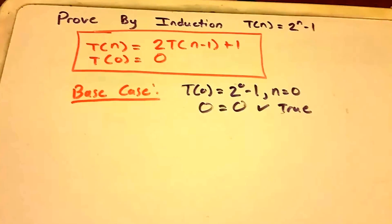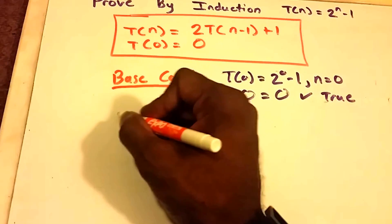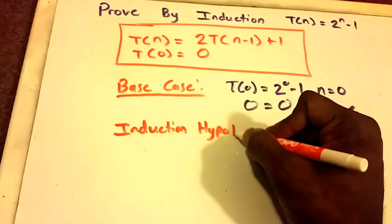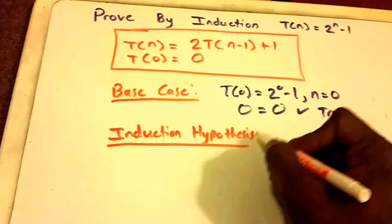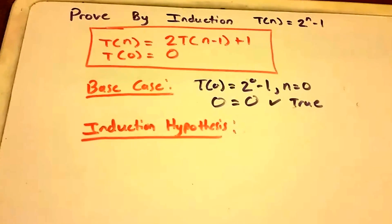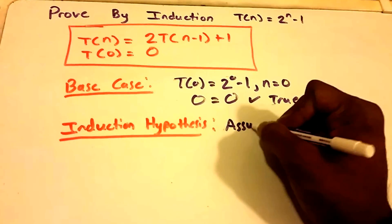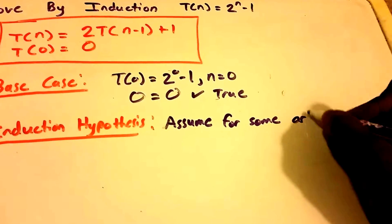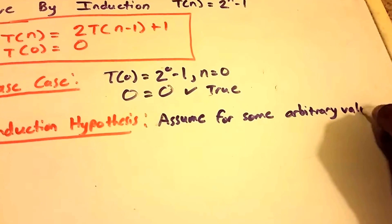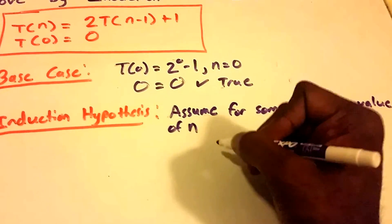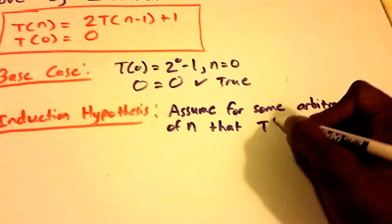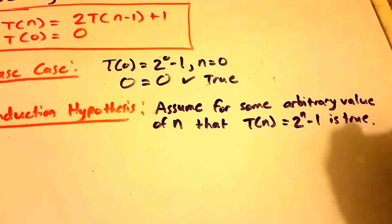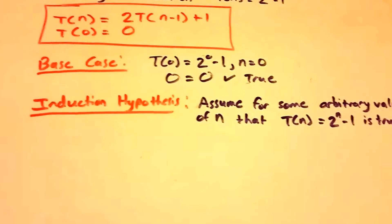The next step is the induction hypothesis. We assume for some arbitrary value of n that T(n) equals 2^n minus 1 is true. This is our assumption, and we will use it in the inductive step.